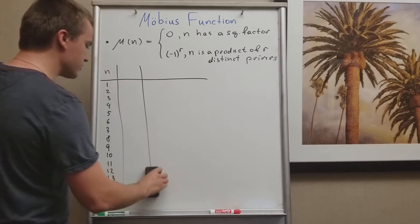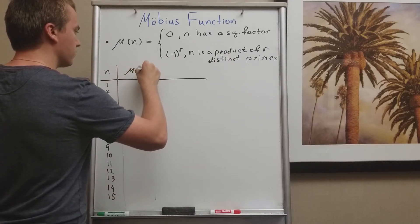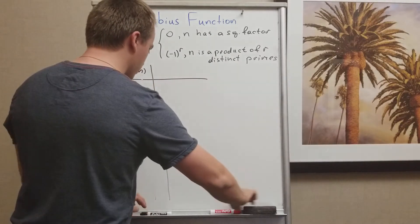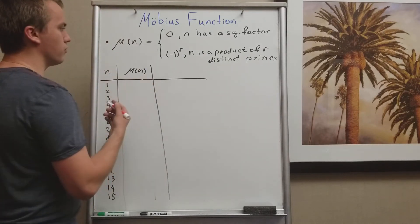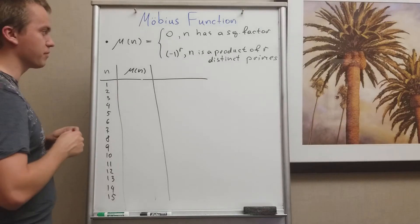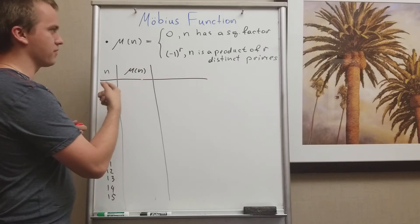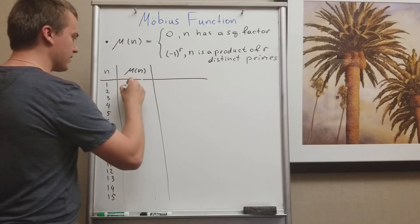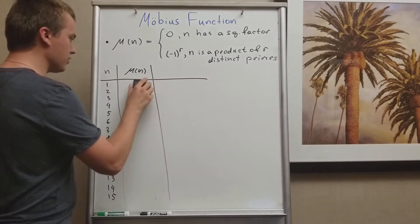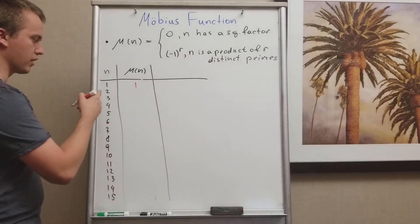And for each of these n, I want to find the value of my μ(n). Just make a table, make a chart. So let's figure out, μ(1): what is μ(1)? I had a debate, but then I went online to check because 1 is not a prime number and 1 doesn't have a square factor. In some sense, 1 does have 1², which equals 1, so it's a square factor.